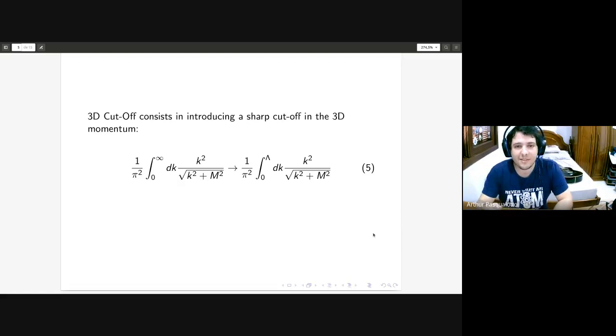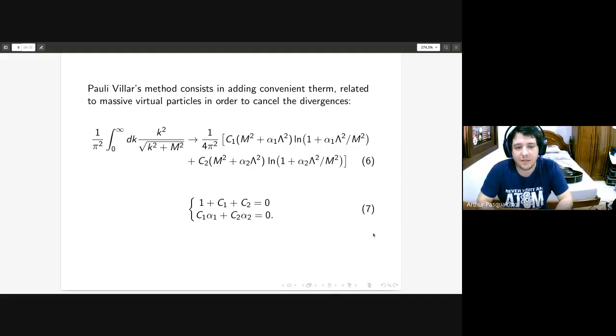One of them is pretty easy - you just introduce a sharp cutoff at a high value we call lambda, which we can interpret as the maximum scale of the model.